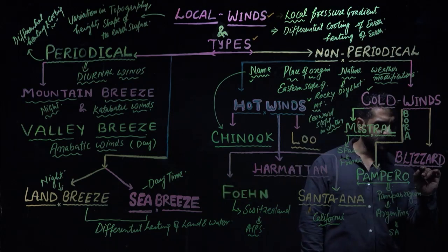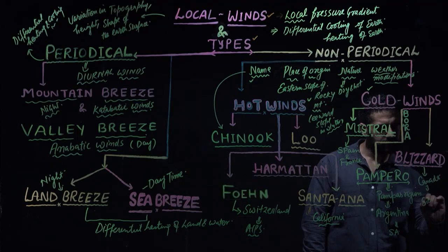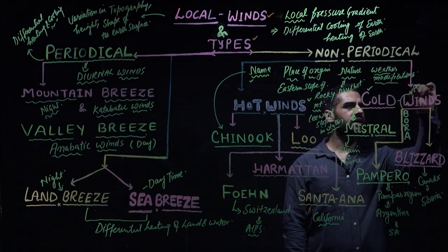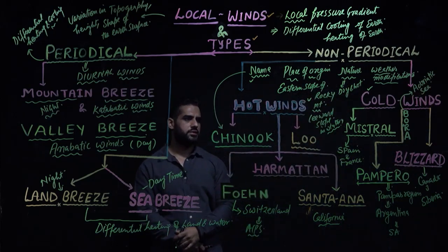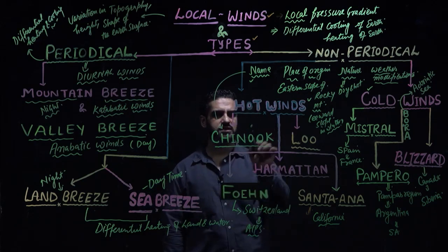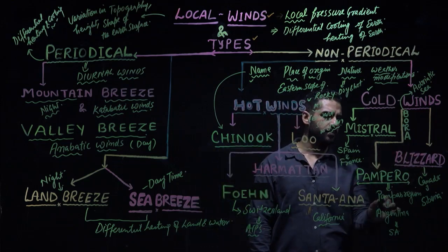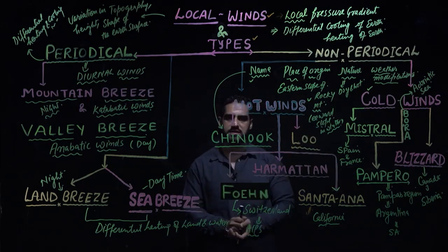Blizzard blows in Canada and Siberia, and Bora blows in the Adriatic Sea. So all these winds are either cold or hot winds. To repeat: hot winds include Chinook, Loo, Harmattan, Fohan, and Santana. Cold winds include Mistral, Bora, Blizzard, and Pampero. There can be many other local winds, hot or cold; we have discussed some of them here.